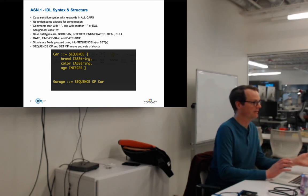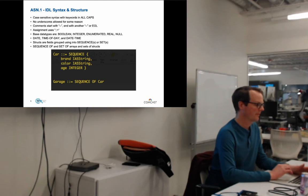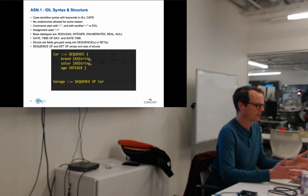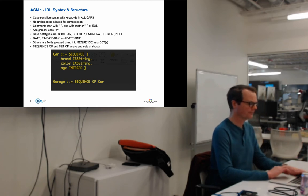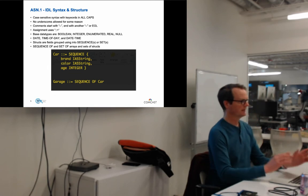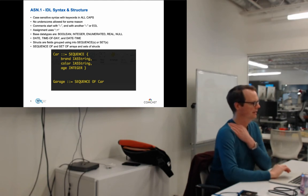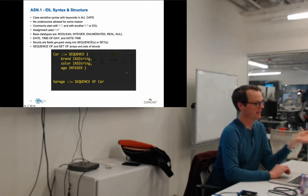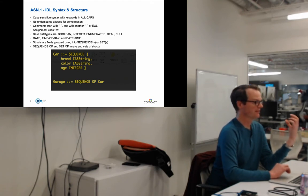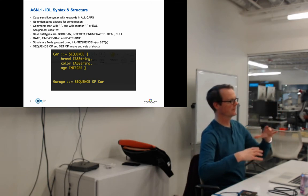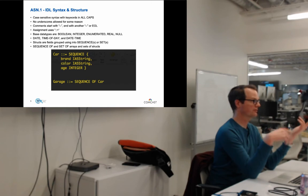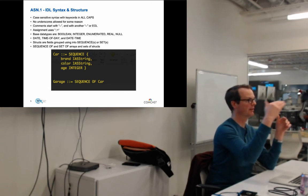ASN.1 has interesting string types: IA5String is the International Alphabet Number 5, which is 7-bit ASCII. They also support UTF strings and a 'visible string' — 7-bit ASCII minus control characters like carriage return, newline, and bell. You can encode binary and hex strings by quoting with ticks and putting a B or H after them. Data structures are defined as a SEQUENCE — like a car with brand, color, and age. SEQUENCE is like a Go struct where member order determines serialization.